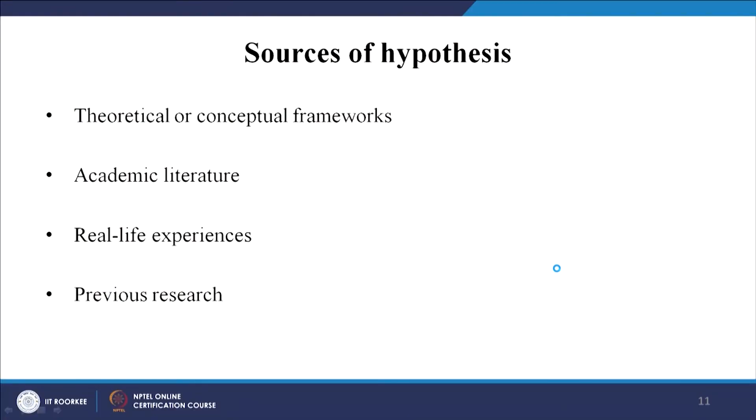What are the sources of hypothesis? How do you develop one? You need some knowledge. The sources include theoretical or conceptual frameworks — if you find a connecting statement, for example A affects B and B affects C, so A also affects C indirectly. Academic literature also helps a lot: when you go through literature and surveys, it generates knowledge, and once you have that knowledge you try to test it in the form of a hypothesis.